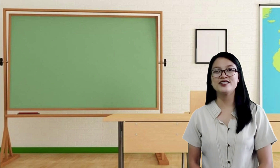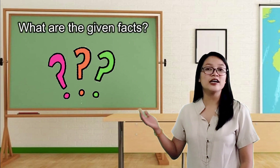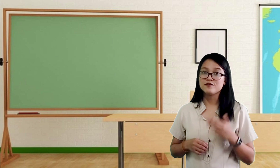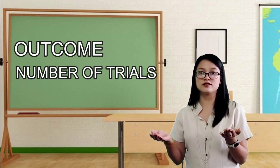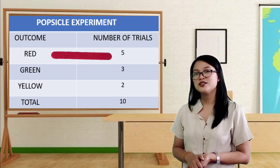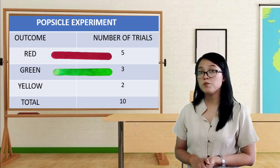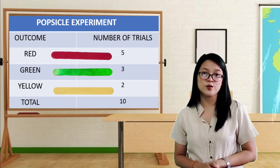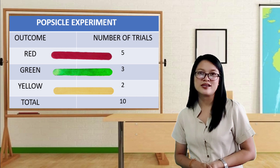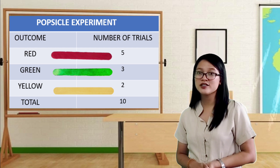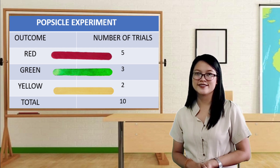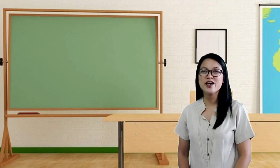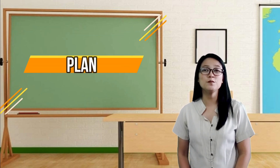The next thing you need to know is what are the given facts. As you can see on the paper where you listed the data we gathered, we have the outcome and the number of trials. The popsicle red was picked five times. The popsicle green was picked three times. And the popsicle yellow was picked two times. We have ten total number of trials.